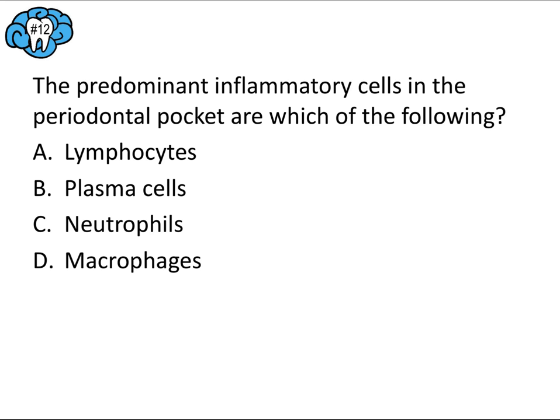Question twelve: the predominant inflammatory cells in the periodontal pocket are which of the following? All of these cells are present in the pocket, but one stands out as the first line of defense. It migrates from blood vessels just below the pocket and makes MMPs — collagenases — that destroy the collagen. That's neutrophils, and the answer is C. Don't overthink it just because all the cells are in the pocket; neutrophils are the most important, so go with the most obvious choice.